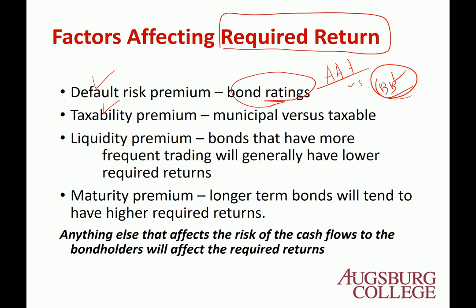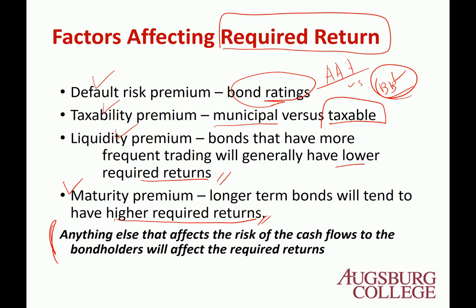Number two is the taxability premium — if you have to pay tax, you may require higher returns, such as municipal versus taxable bonds. The important number is the after-tax number. Liquidity premium means you want to be able to easily convert this bond to cash — it's usually measured by trading volume. If a bond has more volume and frequent trading, it generally has a lower required return. Finally, the maturity premium — long-term bonds usually have higher required return, but sometimes in recession time you have an inverted yield curve and short-term bonds have higher required return. Anything that affects the risk of cash flows to the bondholder will be a factor in required return.